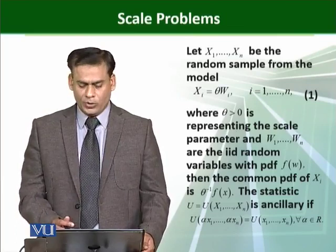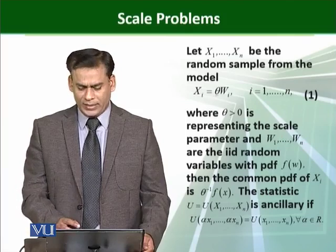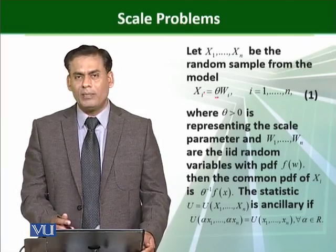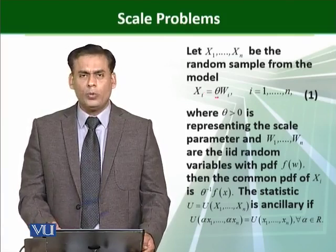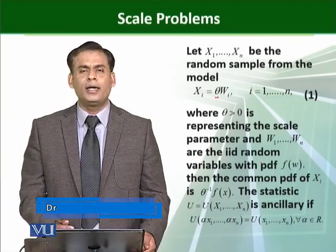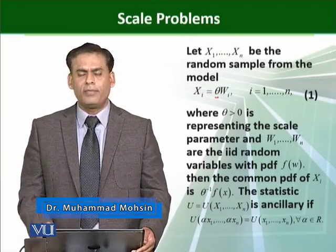Where θ > 0 is representing the scale parameter. Actually, θ here represents the scale parameter if it is going to multiply or divide. We say it is a sort of scale parameter. And W1, W2, ..., Wn are the iid random variables having the probability density function f(w).